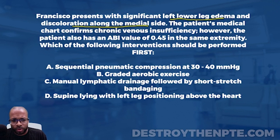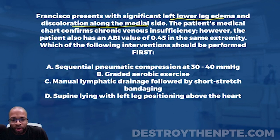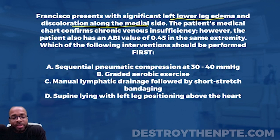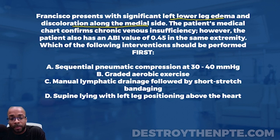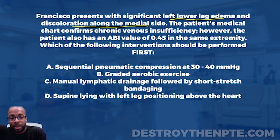The patient's medical chart confirms chronic venous insufficiency — the venous system is not able to bring blood flow out of the lower extremities back to the heart in an efficient way, so blood builds up in the lower extremities. Additionally, the patient has an ABI — ankle brachial index — value of 0.45 in the same extremity. The ABI test looks for arterial disease, and 0.45 indicates severe arterial disease, also known as severe arterial insufficiency — blood is not able to perfuse the lower legs effectively.